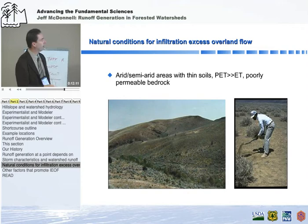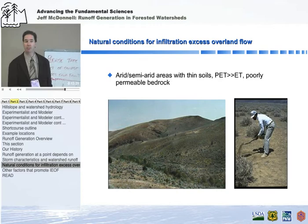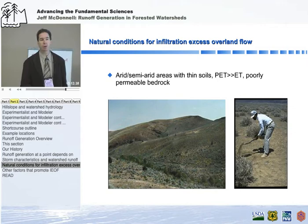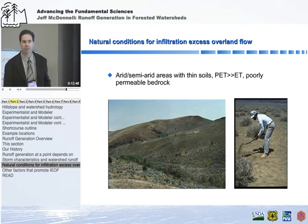Typically we're in areas where potential evapotranspiration exceeds evapotranspiration, with poorly permeable bedrock. In Tucson, for example, soils are very poorly developed, the underlying substrate is quite impermeable, and rainfall intensities are very high. But infiltration excess is often restricted to arid and semi-arid areas. In humid areas it's much less common, unless you're dealing with disturbed environments like suburban settings, lawns, parks, or forest roads.